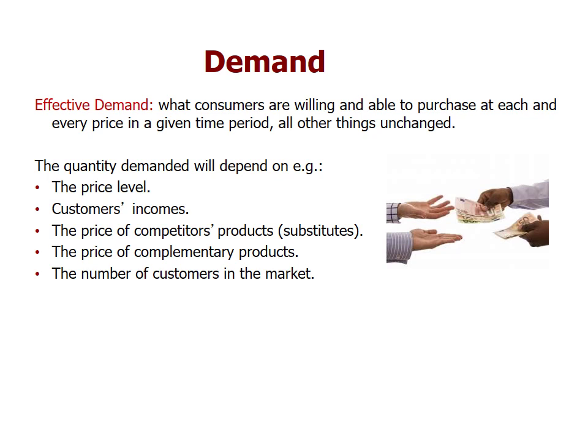The price of competitors' products affects demand through substitute goods — goods where there's a lot of competition, like Coke and Pepsi. If the price of Coca-Cola goes up, the demand for Pepsi might increase because people substitute Pepsi for Coke. They ask: why should I buy Coke at this price when I can get Pepsi?